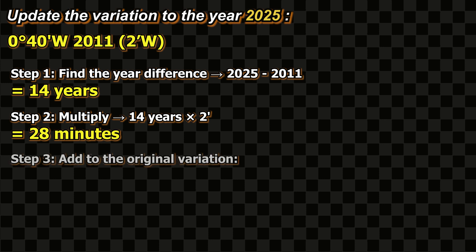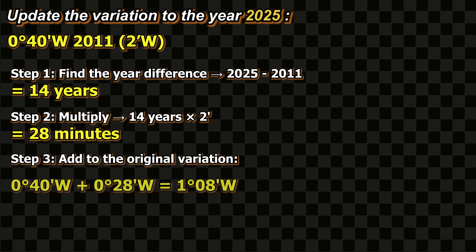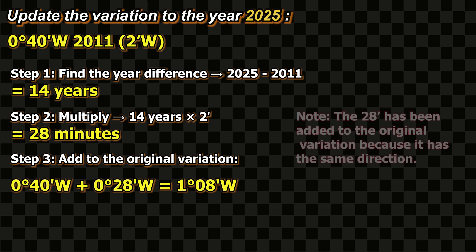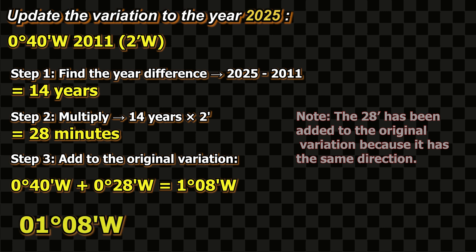Step 3: Add the 28 minutes to the original variation. 0 degrees 40 minutes west plus 0 degrees 28 minutes equals 1 degree 8 minutes west. The 28 minutes has been added to the original variation because it has the same direction. So, the updated magnetic variation for 2025 is 1 degree 8 minutes west. That's the value you'll apply when converting between true and magnetic bearings.